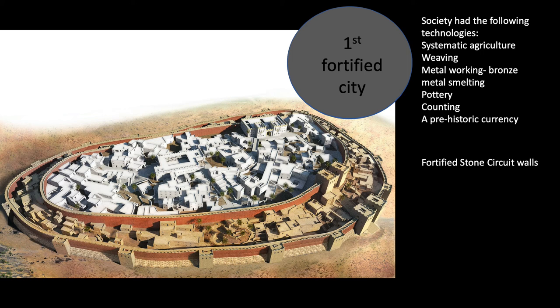Society had new technologies like systemic agriculture — they were able to domesticate crops and create a system of agriculture. They aren't solely dependent on crops for food, because there are animals in their area and they do hunt. Weaving is a major part of their lives, and they now utilize metal better through smelting processes, moving from Stone Age communities to Iron Age communities.